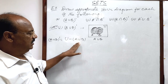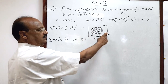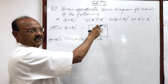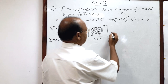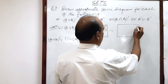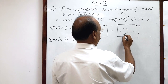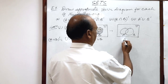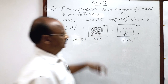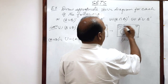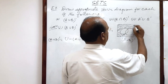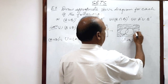So, it is universal set minus A union B. The universal set is this entire rectangle. From this entire rectangle, we omit the shaded portion of A union B. The remaining area — the area outside these two circles representing A and B — will be shaded, which represents A union B whole complement. This shaded area outside the two circles will represent A union B whole complement.